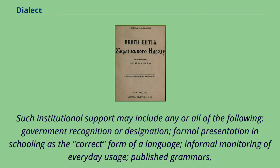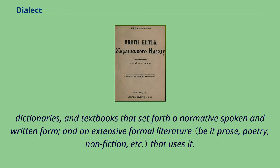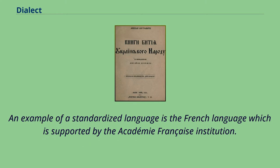Institutional support may also include published grammars, dictionaries, and textbooks that set forth a normative spoken and written form, and an extensive formal literature that uses it. An example of a standardized language is French, which is supported by the Académie Française institution.